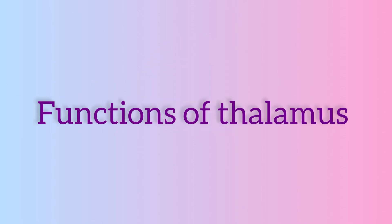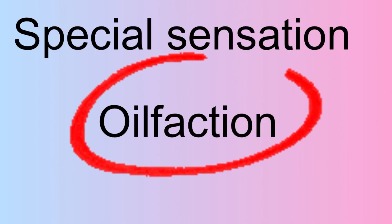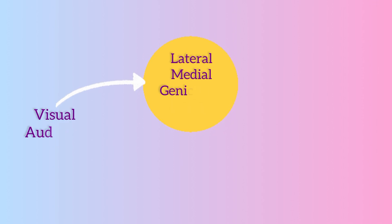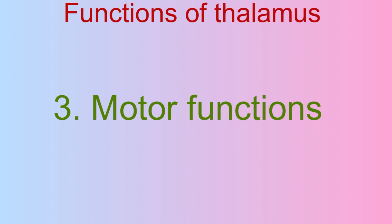The main function of the thalamus is as a relay station for somatic and special sensations. In special sensations, olfaction is the exception — it bypasses the thalamus. The lateral and medial geniculate bodies receive inputs from the visual and auditory pathways respectively, and the ventral posterior lateral nucleus receives taste information.